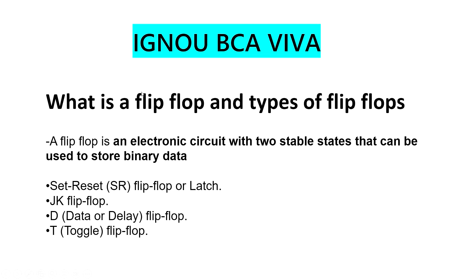Coming to the next question: what is a flip-flop and types of flip-flop? A flip-flop is an electronic circuit with 2 stable states that can be used to store binary data. Types of flip-flops are: SR flip-flop (Set, Reset), JK flip-flop, D flip-flop (Data/Delay), and T flip-flop (Toggle).